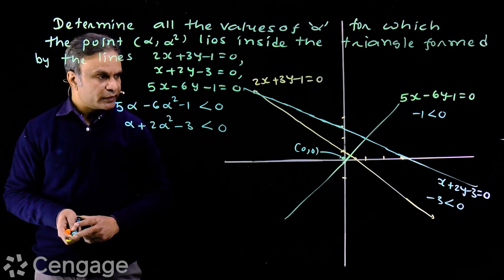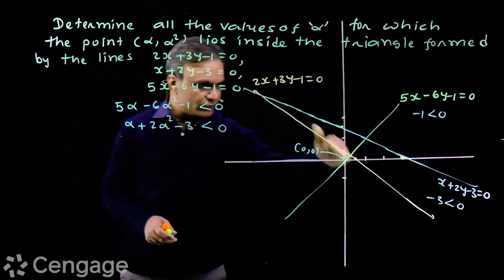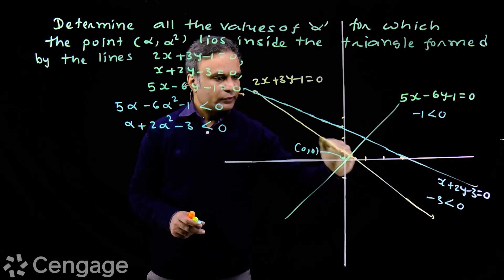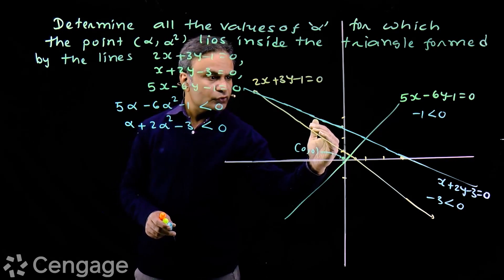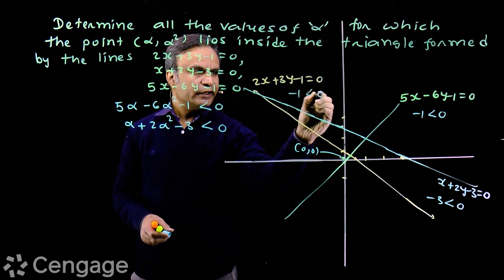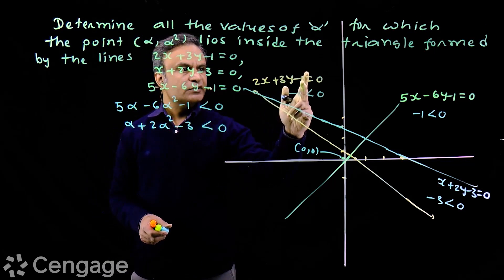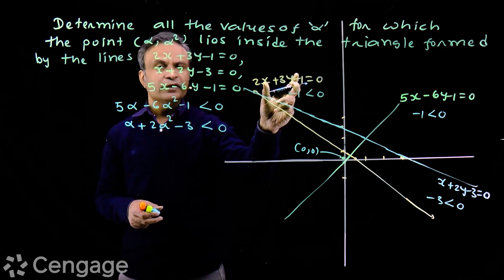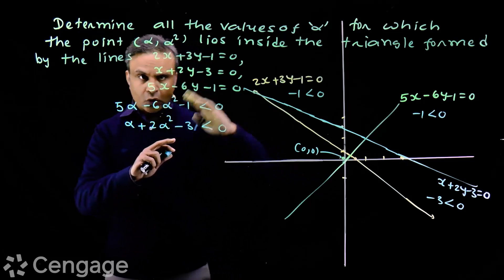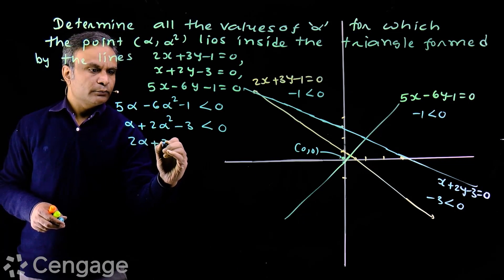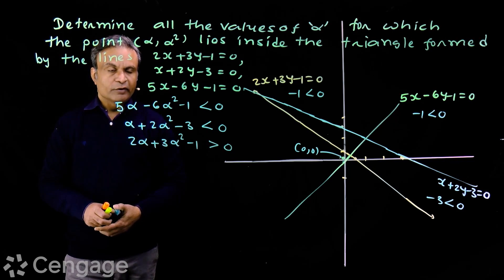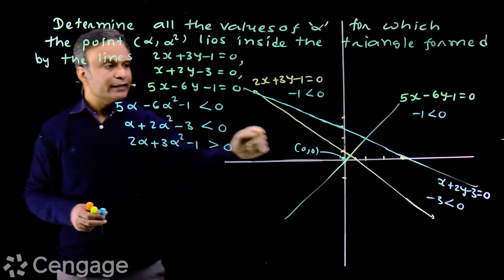We impose one more condition with respect to the line 2x + 3y - 1 = 0. The origin and this point lie on opposite sides of this straight line. The origin is on one side, and the point inside the triangle will be on the other (upper) side. With respect to the origin, the sign of this expression is negative, so with respect to this point the sign must be positive. Therefore we have 2α + 3α² - 1 > 0. We now have three conditions.